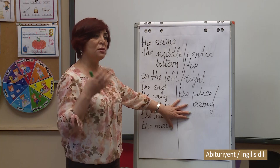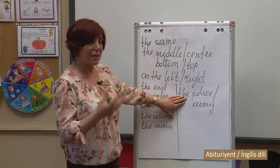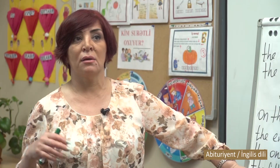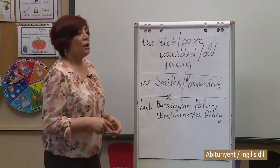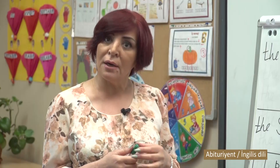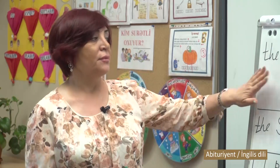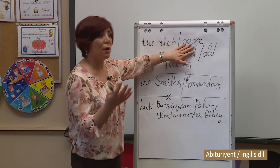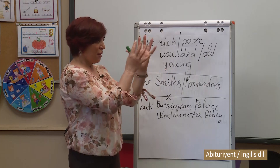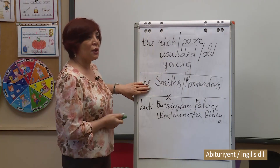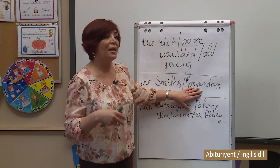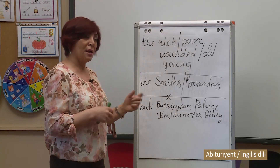We use 'the' with 'the police' — this word is always used with 'the' and is understood as plural: 'The police are,' not 'The police is.' Similarly, 'the army.' We also use the definite article with substantivized adjectives, and they are understood as plural, requiring a plural verb: 'the rich are,' 'the poor are,' 'the wounded,' 'the old,' 'the young.' We also use 'the' in front of surnames when referring to the whole family: 'the Smiths,' 'the Mamedovs,' 'the Ahmadovs' — for example, 'The Mamedovs like…,' 'The Mamedovs have…'